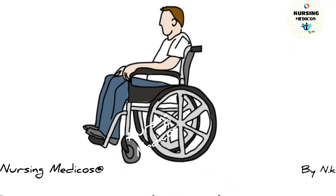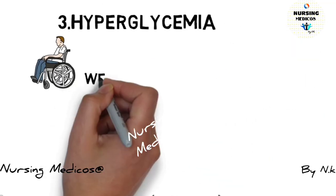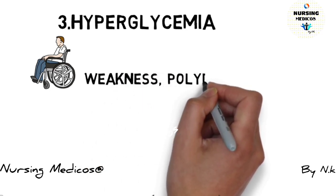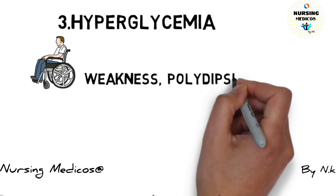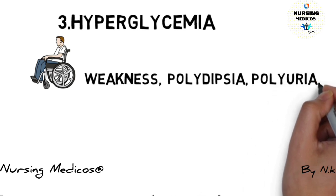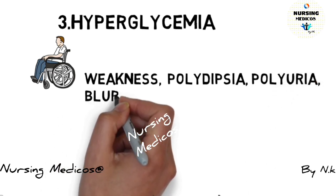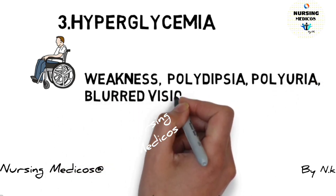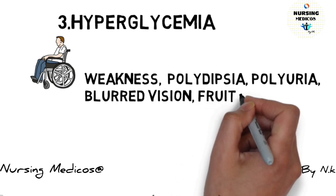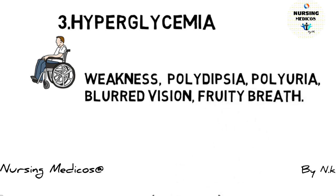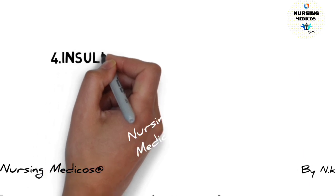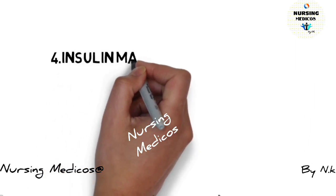Third one is hyperglycemia. In hyperglycemia, the patient feels weakness, polydipsia, polyuria, blurred vision, and fruity breath.